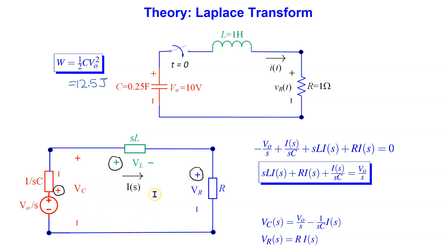We assume a clockwise reference current direction. For the impedances, the end where the reference current enters is marked positive, and the end where the reference current leaves is marked negative. Applying Kirchhoff's voltage law and the passive sign convention, we obtain the circuit equation shown here. Note that the first term is negative since we are going from minus to plus, and the remaining terms are positive since we are going from plus to minus. This equation can be rearranged into the form shown here. The voltage across the resistor is simply the resistance times the current.